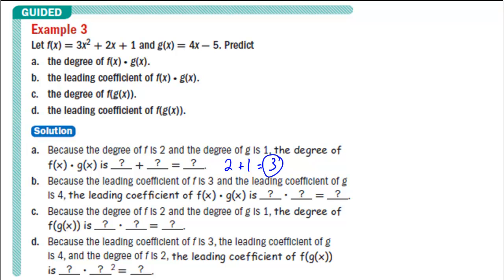Part B asks for the leading coefficient of the product of those two polynomials. When you multiply polynomials together, the coefficients are being multiplied together. Therefore, the new leading coefficient is the product of the leading coefficients of each polynomial. So the new leading coefficient would be 3 times 4, which is 12.